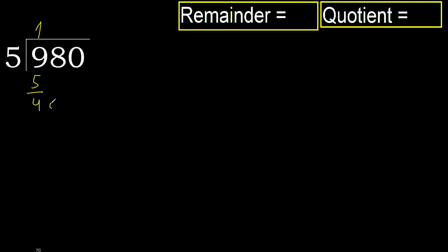Next. 48. 5 multiplied by 9 — 45 is not greater. Subtract.